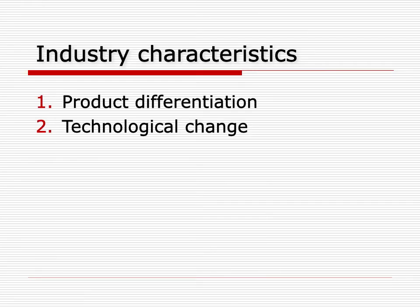A second feature that was important even in the very early days, and continues to be important, is technological change. For over 60 years, this industry has been characterized by rapid technological change — not incremental change, but vast improvement from generation to generation of systems. That means that in some cases, the new products can be so much more advanced that customers can jump, even with those big costs, and leapfrog to a different company with the next generation.